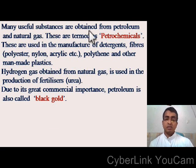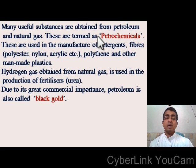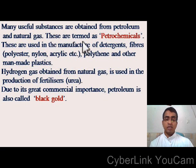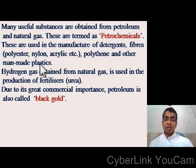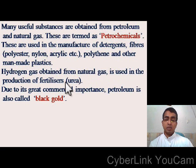Many useful substances are obtained from petroleum and natural gas; therefore, these are termed as petrochemicals. These are used in the manufacture of detergents, fibers such as polyester, nylon, acrylic, etc., polythene and other man-made plastics. Hydrogen gas obtained from natural gas is used in the production of fertilizers, especially urea.